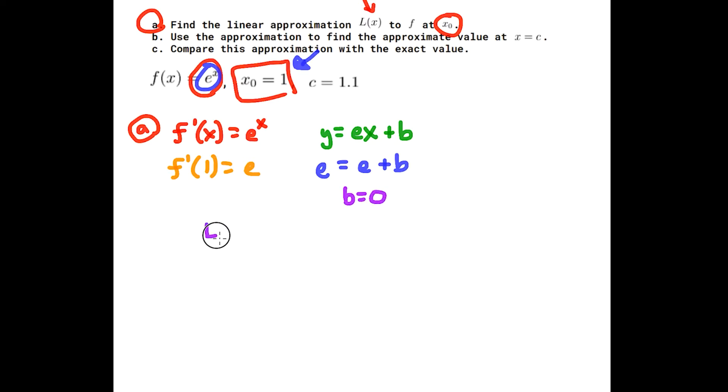So your L(x) linear approximation equation is just going to be e times x. All right, for part b it says use this approximation to find the exact value at x equals c. Here we go, there's x equals c right there at 1.1. So we need to figure out what L(1.1) is.